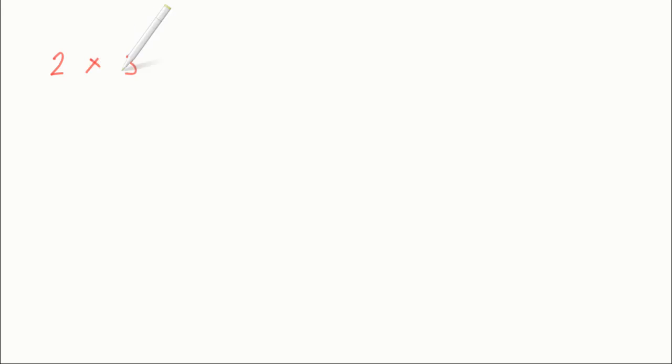Welcome to this lesson. What does the word product mean in maths? All it means is the answer that you get when you multiply two or more things together. So what's the product of 2 and 3? It's simply the answer you get when you multiply those two numbers together. So 2 times 3 equals 6, meaning the product of 2 and 3 is 6.